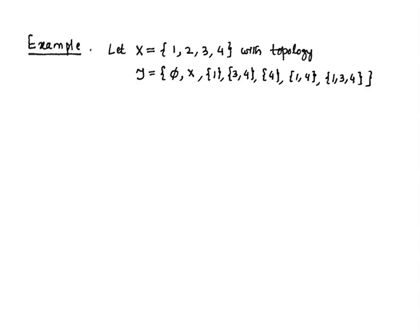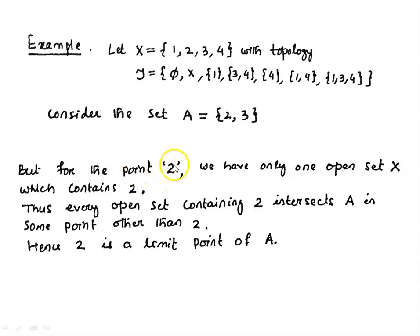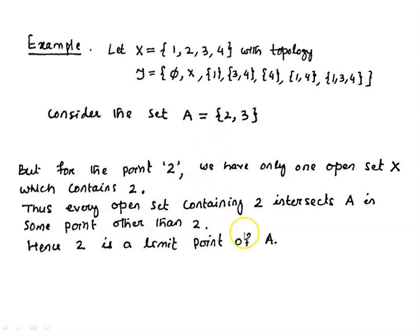Let us take the same topological space with A = {2, 3} and consider the point 2. The only open set containing 2 is X itself, the whole space, and this open set intersects A at some point other than 2. So every open set containing 2 intersects A in some point other than 2, meaning 2 is a limit point of A.